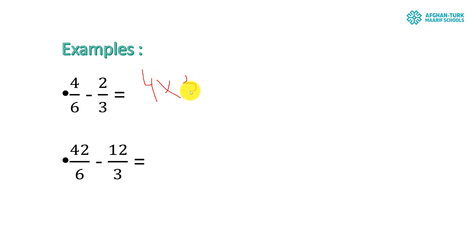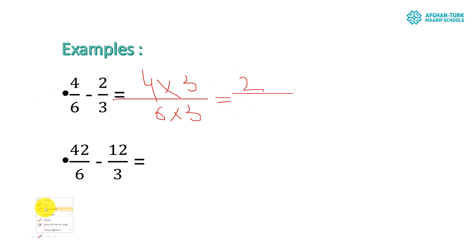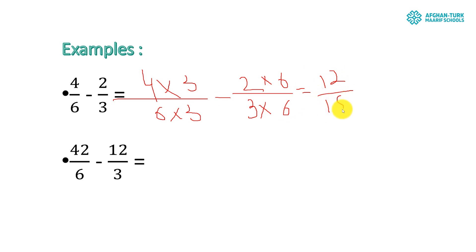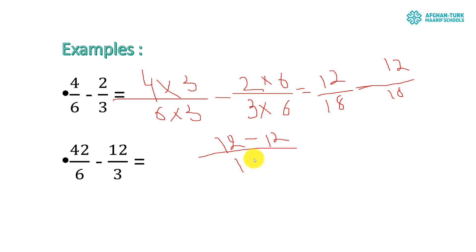So: 4 times 3 over 6 times 3, minus 3 times 6 over 2 over 3 times... So we get 12 over 18 minus 12 over 18. The denominators are equal at 18. So 12 minus 12 over 18 equals 0 over 18.